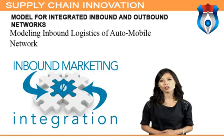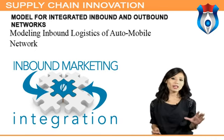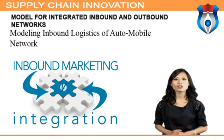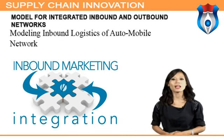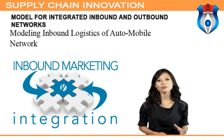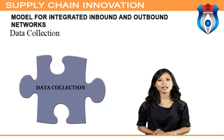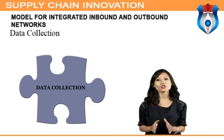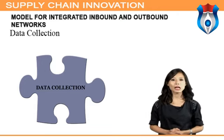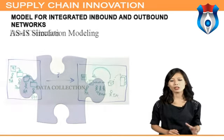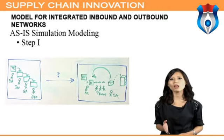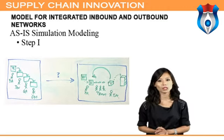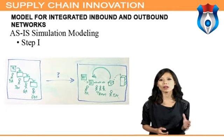Modeling the inbound logistics of an automobile network: the first step in inbound modeling is to create the AS-IS model. The AS-IS model is used to represent the current logistics system in terms of an assimilation model, helping us analyze current operations and identify areas for improvement. Data collected includes information regarding suppliers, the location, quantity of material moved in a particular time period from suppliers to the plant, and average transportation costs per truck. In simulation step one, supplier cubic meter capacity per day is used to create supply schedules.